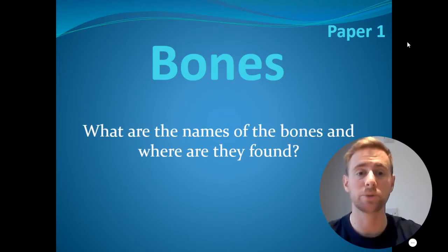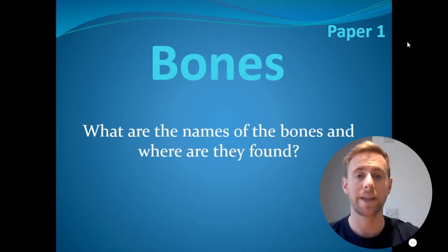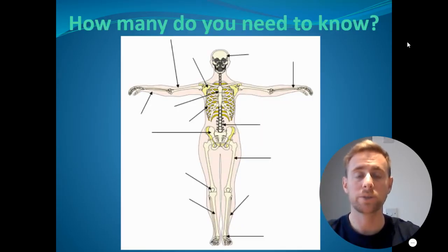In this video we're going to look at bones, which is a paper one topic from GCSE AQA, and we're going to look at the names of the bones and where they can be found in the body. Now we use an image all the time when talking about locations of bones, so it's important you have some form of image in front of you. Even if you don't have this one, you could draw it or download another one. Just important that you have a rough idea of where the bones are as we work through them.